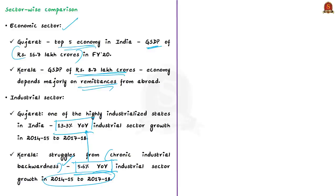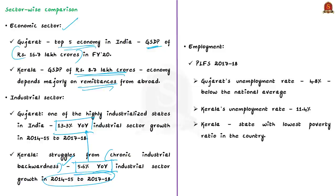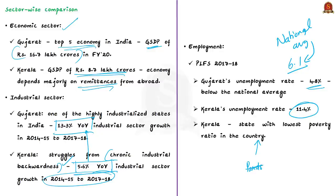Regarding employment, according to the Periodic Labour Force Survey of 2017-18, Gujarat's unemployment rate was 4.8 percent, far below the national average of 6.1 percent. But both the national average and Gujarat's rate are far below Kerala's unemployment rate of 11.4 percent. Here exists the biggest paradox in the Kerala-Gujarat models: Kerala is the state with the lowest poverty ratio in the country but has an unemployment rate of 98 per thousand persons. So even though unemployment is high, poverty is very low in Kerala.